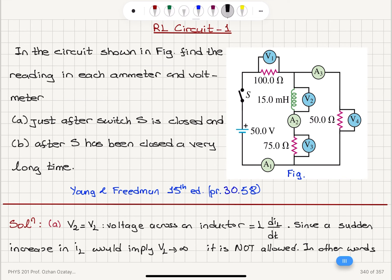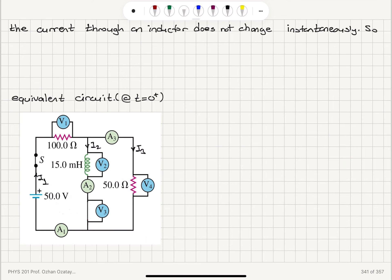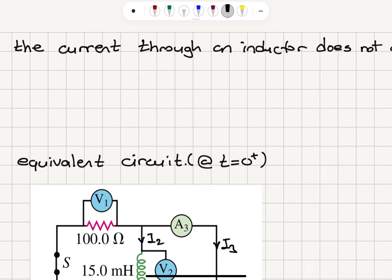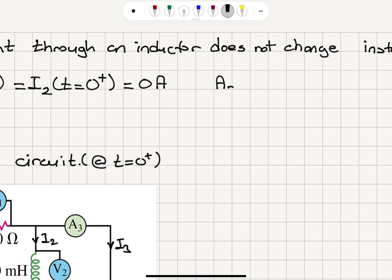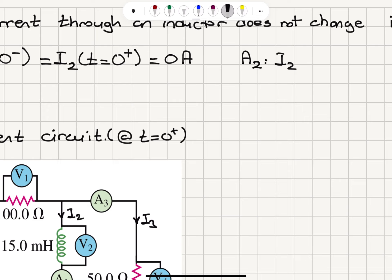At t = 0 minus, before the switch was closed, the circuit was not connected to a battery, so the current through the inductor was 0 amperes. The ammeter-2 reading I2 at t = 0 minus must equal its value at t = 0 plus, because the current through an inductor does not change instantaneously. Therefore I2 = 0 amperes in Part A.